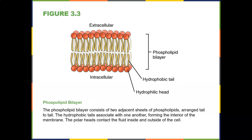Going back to the phospholipid bilayer — it consists of two adjacent sheets of phospholipids arranged tail to tail. The tails are hydrophobic and don't like water, and the heads are hydrophilic and do like water. Extracellular is outside the cell, and intracellular is where the cytoplasm is. A little bit of cholesterol in here affects how rigid the plasma membrane or cell membrane would be.